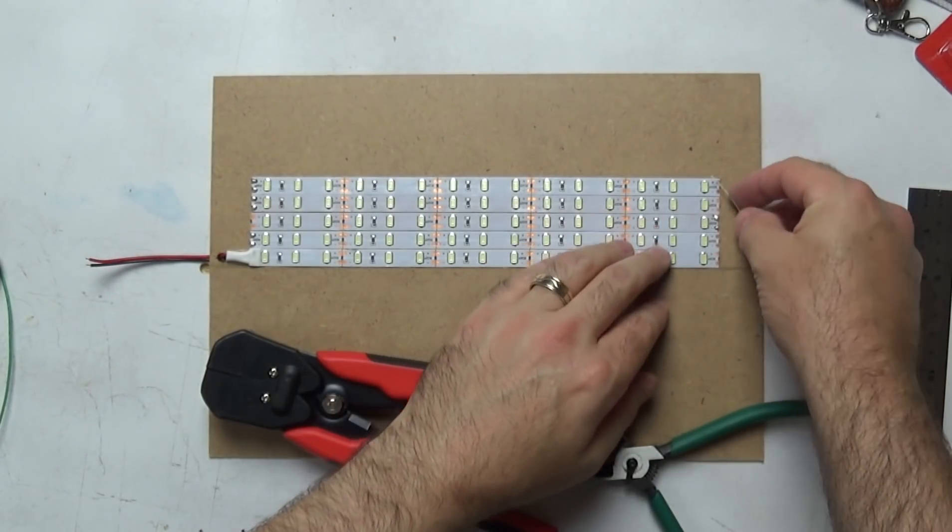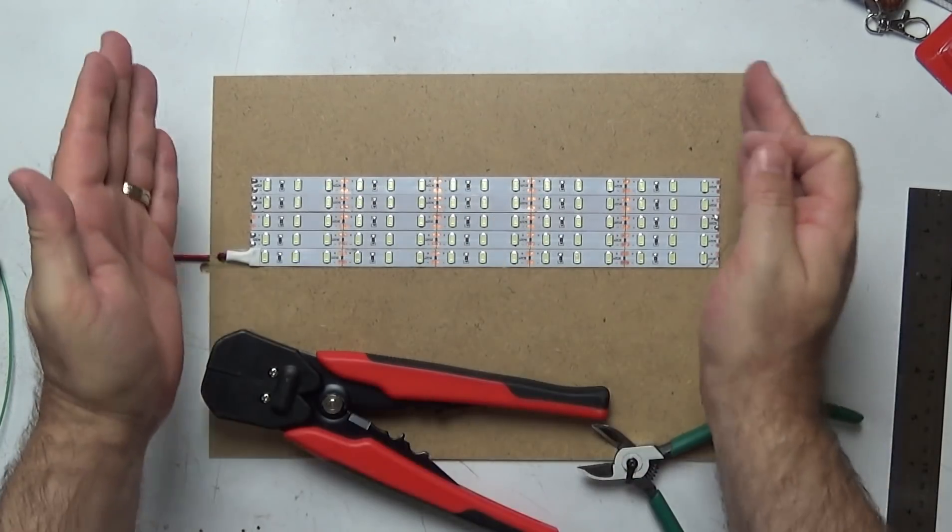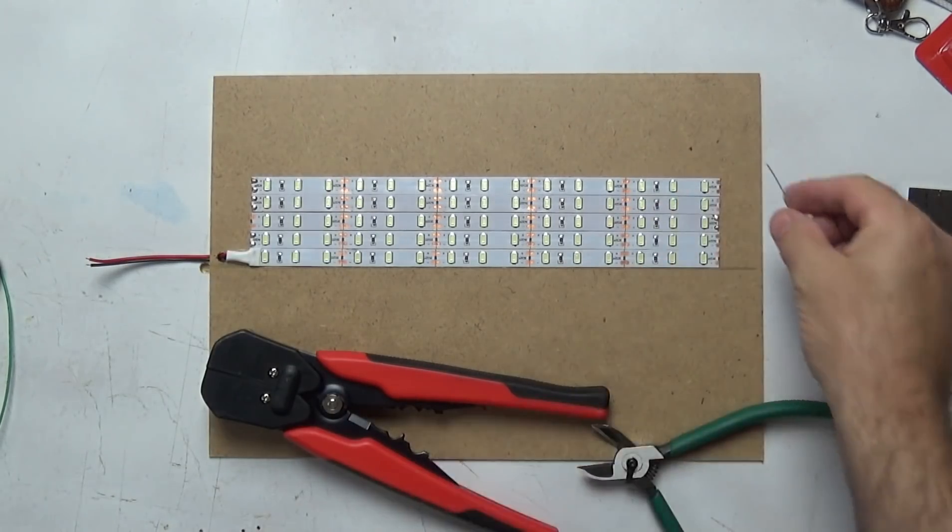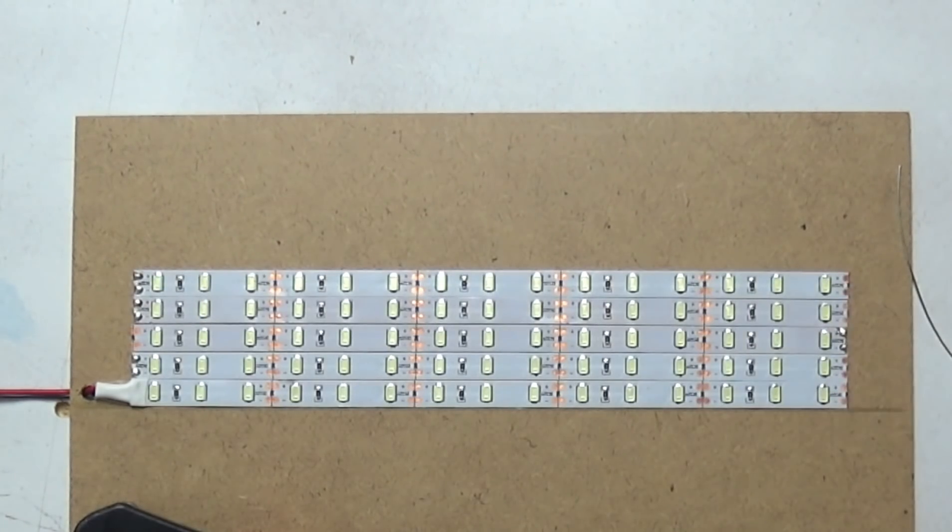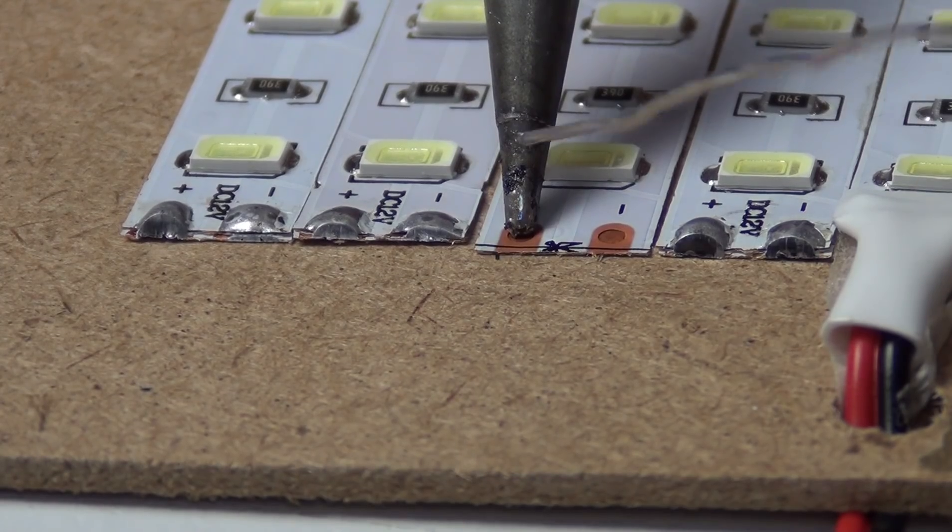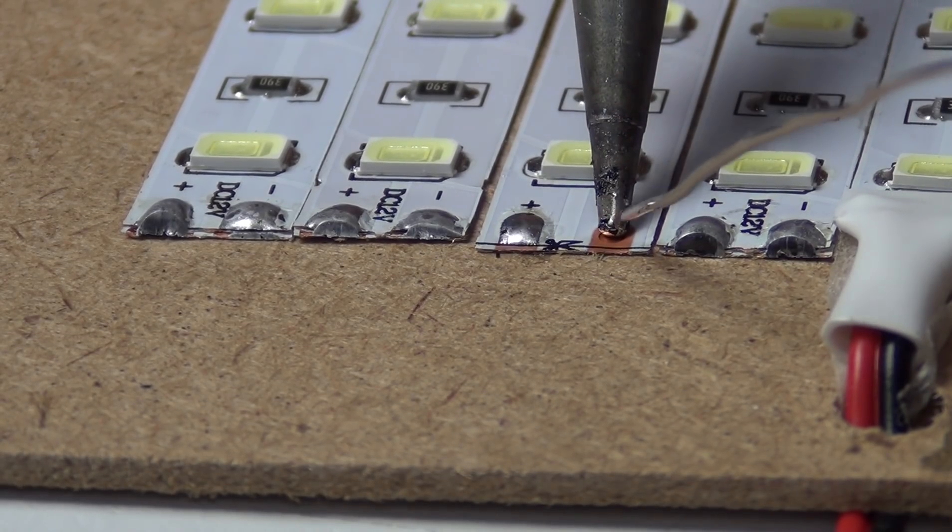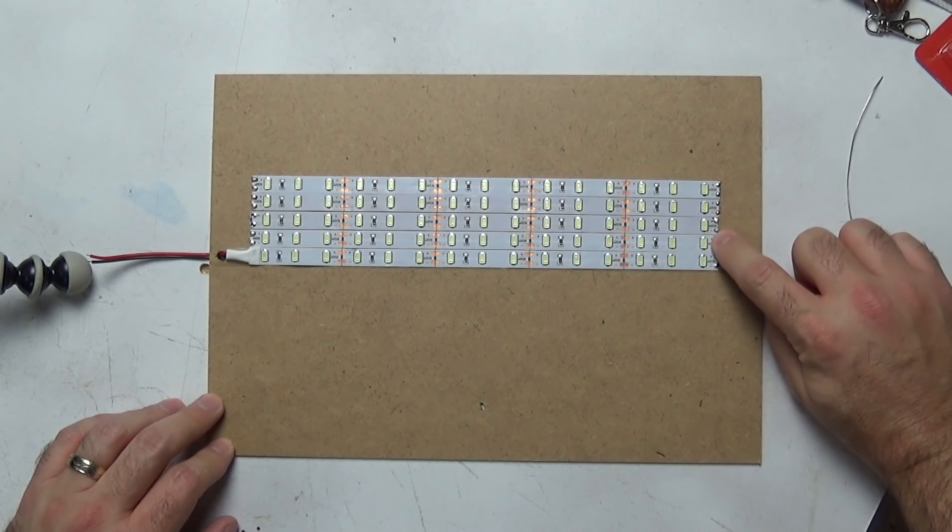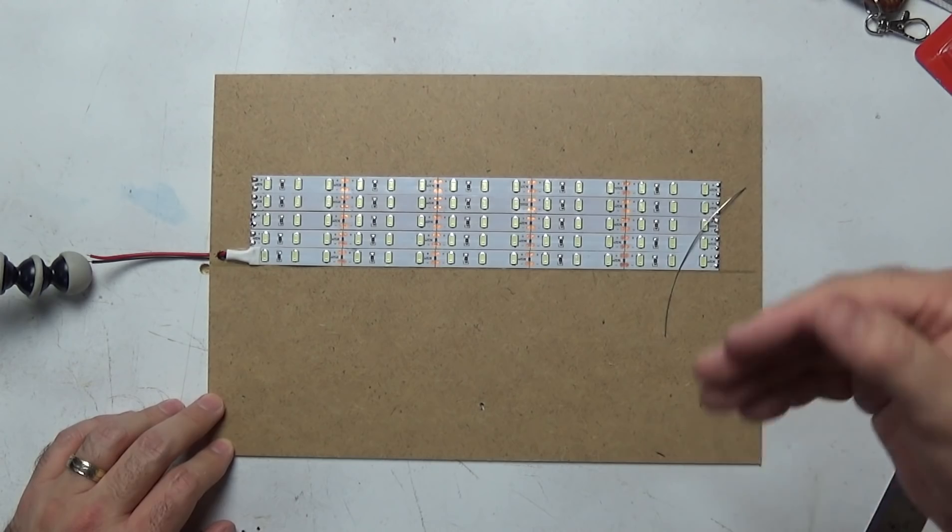So what I'm going to do is, as I've done with the previous video, this is going to be a zigzag pattern all the way down over here, connecting all of the positives and connecting all of the negatives. It doesn't matter which side you use, as long as one side is positive or negative and the other side is the opposite. So first things first, I'm actually going to tin the pads that don't have any solder on them already, and down the other side as well, and then start some soldering.